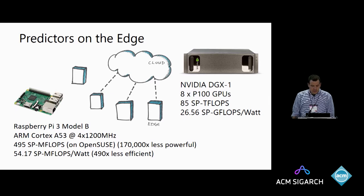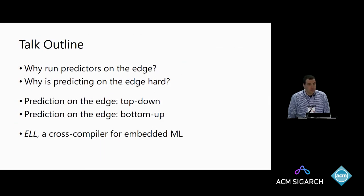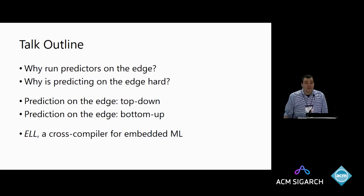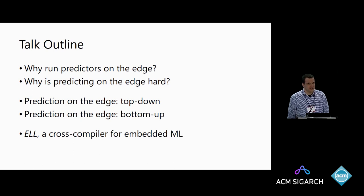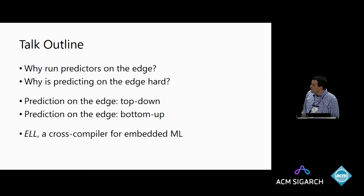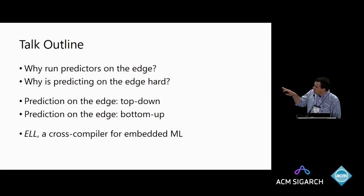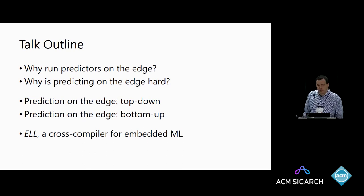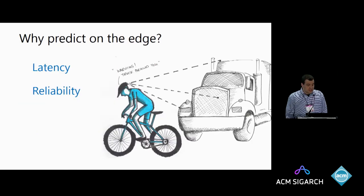Here's the outline of the talk. First, why do we want to do that — why is it not satisfactory to always do our AI in the cloud? The second question is why is it going to be hard — why is this something that an algorithmist like me is interested in? Then we'll dive into the machine learning parts and talk about two approaches. I'll talk about the first one more than the second, and then I'll plug a compiler that we're building.